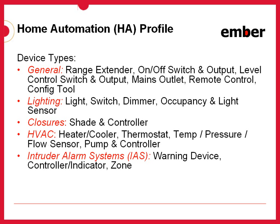Device types in the HA profile include the basic range extender, which has no functionality other than to repeat packets across the network. There are on-off switches and their corresponding outputs, level control switches and their outputs, mains outlets, remote controls, and a configuration tool. In the lighting area, we have lights, switches, dimmers, occupancy sensors, light sensors, and shades with shade controllers.